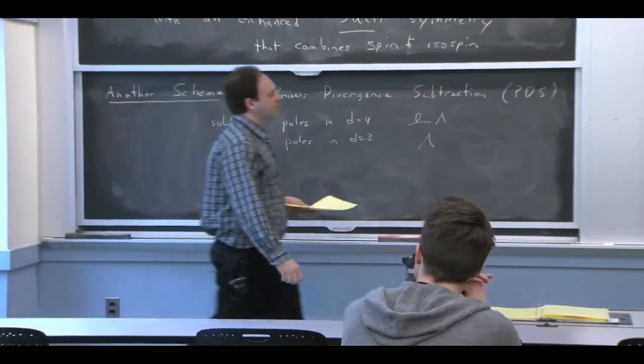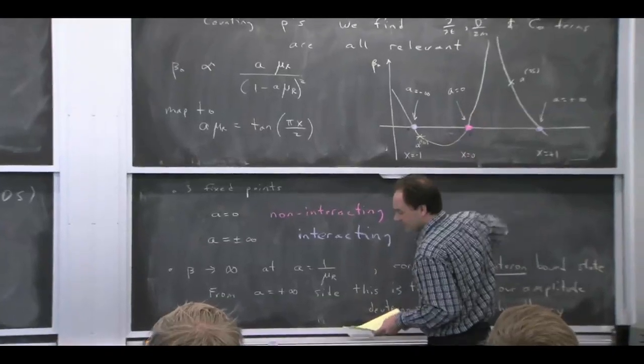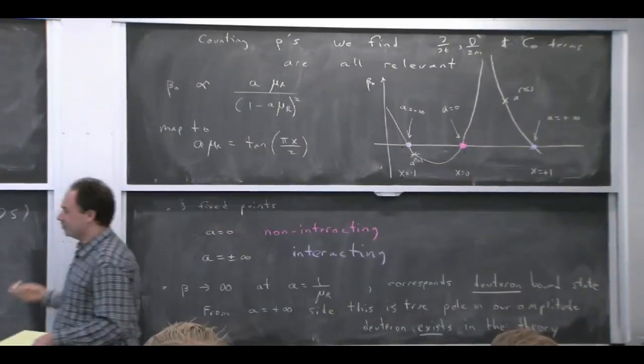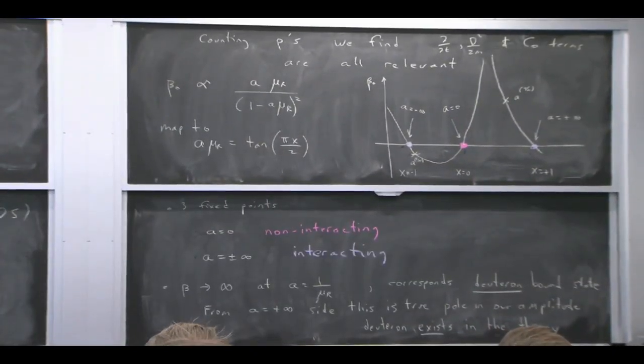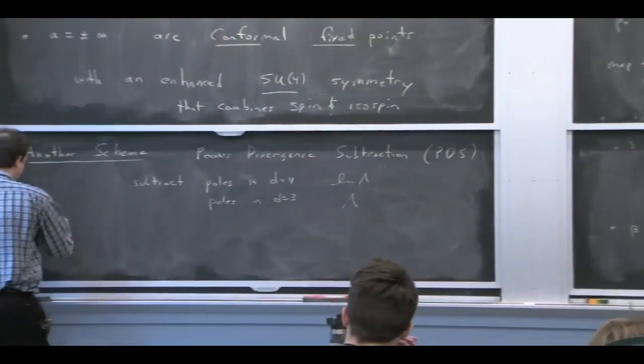They're not doing anything as long as you know you're at the right fixed point. If you're describing the right physics around one of these fixed points, you can concentrate on the logs. But if you don't know where you are, then the power law divergences could be crucial. All right, how does this game work?